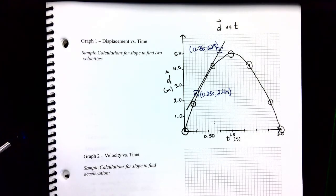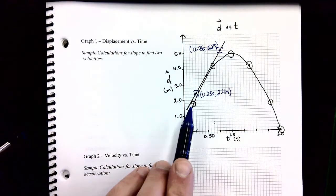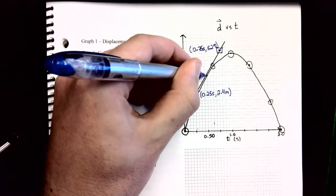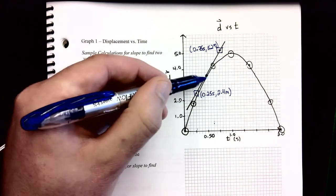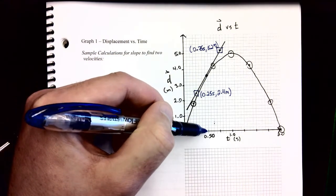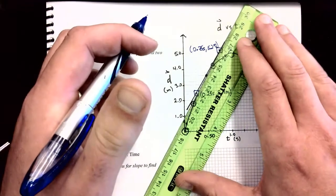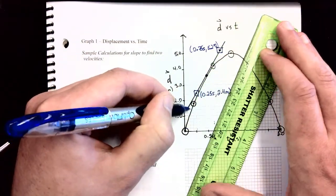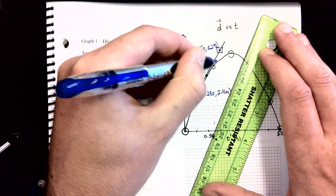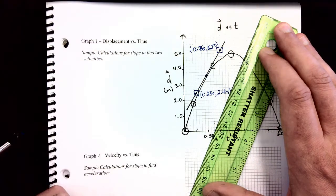Alright, so to recap, so far I have selected a point on the graph, which I want to know the velocity. I decided I wanted to know the velocity at 0.5 seconds, and I put a tangent line down, touching the graph at 0.5 seconds. I made sure that the gap between the line and the curve was about even on either side, and now I've picked two points off the tangent.